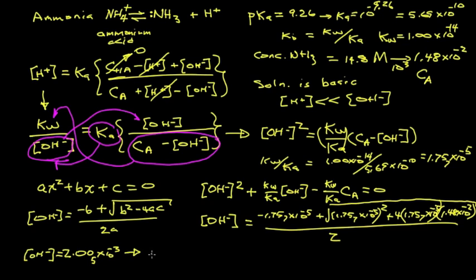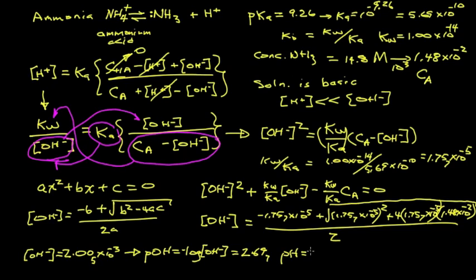We can calculate the pOH, which is minus the log of the hydroxide activity — or as an approximation, the concentration. That gives us a numerical value of 2.697. The pH is just pKw minus pOH, which is 14 minus 2.697. Plugging the numbers in, we get a pH of 11.302, so 11.30 is our pH.